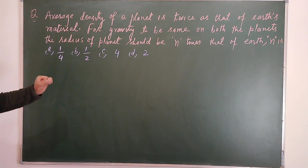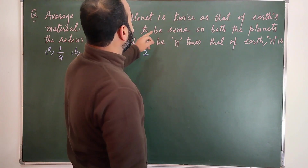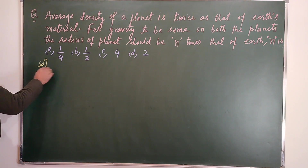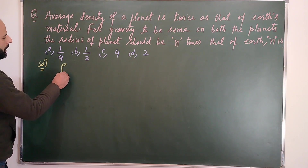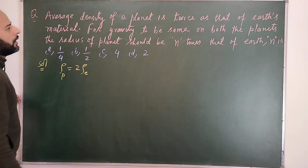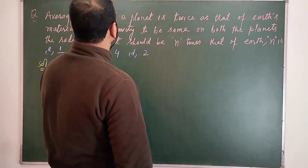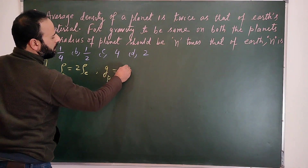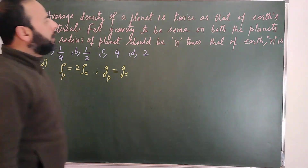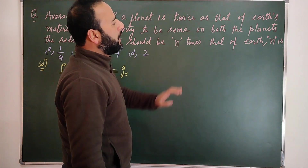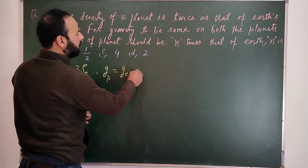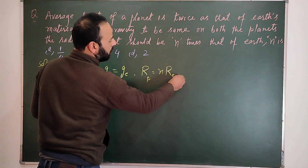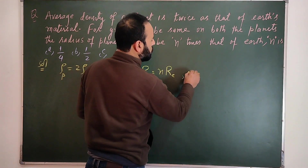For the gravity to be the same, it is given that the average density of the planet is twice that of the Earth. The gravity on the planet should equal the gravity on the surface of the Earth. The radius of the planet is n times the radius of the Earth, and we have to find the value of n.